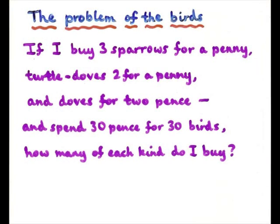Supposing you buy some birds — you might buy three sparrows for a penny, two turtle doves for a penny, but doves, being more expensive, cost you two pence. And supposing you spend 30 pence and you buy 30 birds. How many of each kind do you buy?